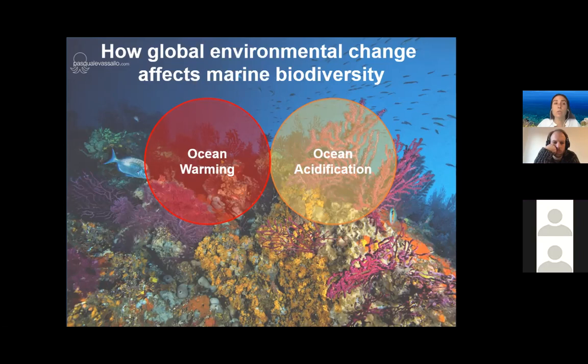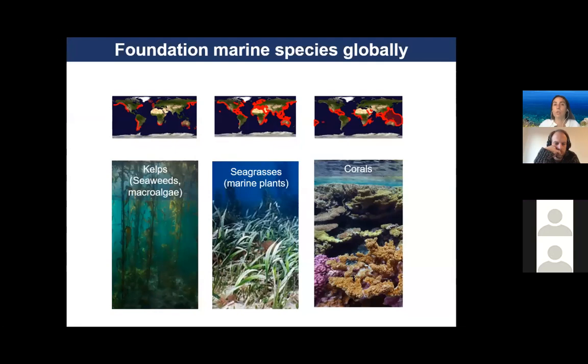First of all, I would like to present some very important coastal marine species. We call them foundation marine species because they create habitat for other marine species, including fishes. These species occur globally, and I am talking about kelps — also named seaweeds or macroalgae — seagrasses, which are marine plants, and corals.